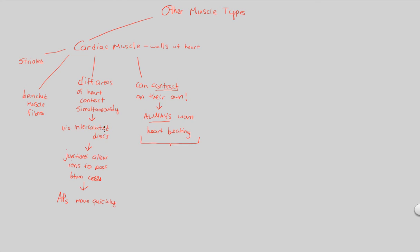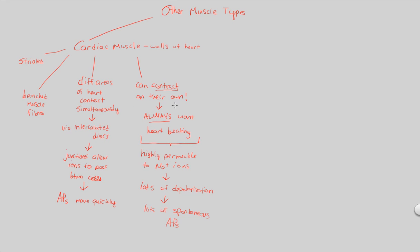The reasoning behind this, in addition to intercalated discs and simultaneous contraction, is that cardiac muscle cells are highly permeable — they really allow positive sodium ions to enter them. An influx of positive sodium ions causes depolarization. If you're very permeable to sodium ions, you're going to have lots of depolarization, which means lots of excitation, which means lots of spontaneous action potentials. Spontaneous action potentials combined with quick-moving action potentials gives you a successfully beating heart, functioning in this very specific and highly regulated form.